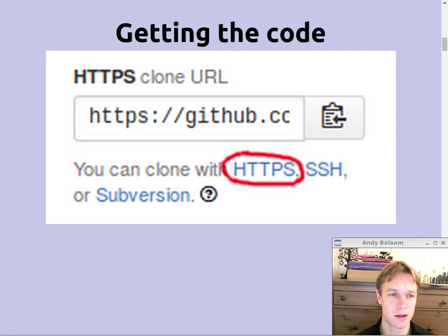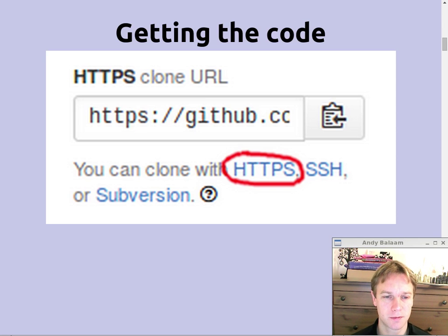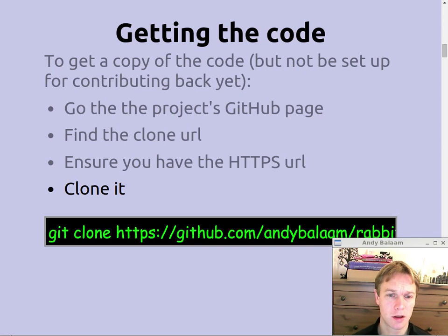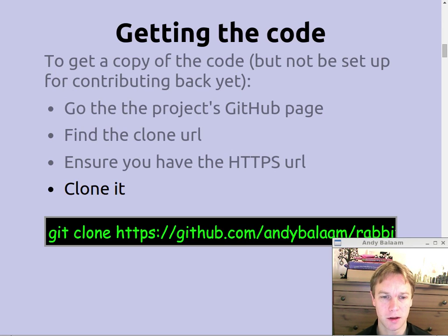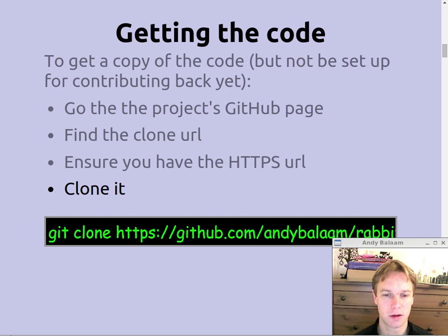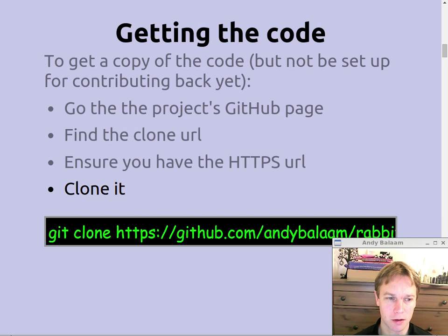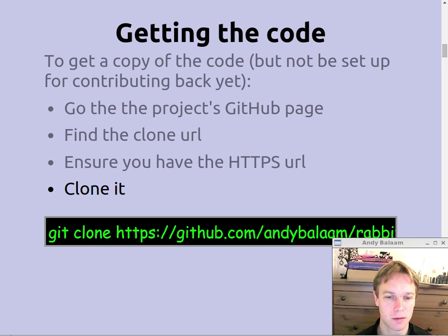Click on HTTPS unless it already says HTTPS, and that will give you the HTTPS URL. Then to clone it, make sure you've got Git installed and then you can just say git clone and paste in that HTTPS URL. Git will basically just download the code into a directory named after the project and you'll have that code. It's not far off from being set up to contribute as well, but it's not the right way to do it if you want to send in pull requests.